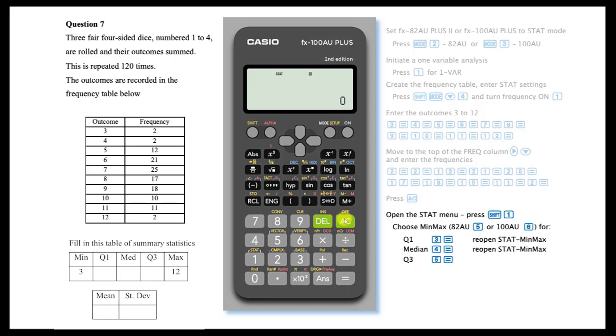To perform the required statistical calculations, open the STAT menu by pressing SHIFT then 1. Choose the MIN-MAX option by pressing 6 on an FX-100AU or pressing 5 on an 82AU.